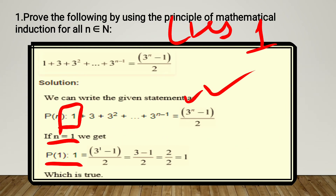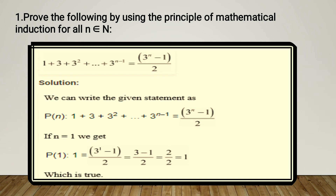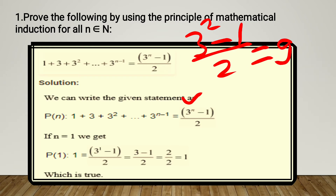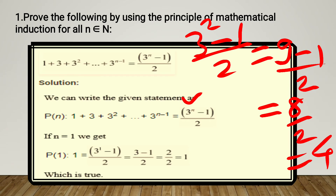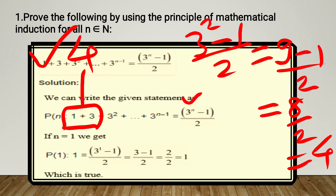Now if we put n=2, let's see what answer we get. First RHS: 3 to the power 2, minus 1, divided by 2. 3 squared is 9, minus 1 by 2 gives 8 by 2, which is 4. So RHS is 4. For LHS we count 2 terms: the first and the second — 1 plus 3, which gives 4. So LHS is also 4 and RHS is also 4. For n=2, the condition is also satisfied, LHS equals RHS, so P(2) is also satisfied.